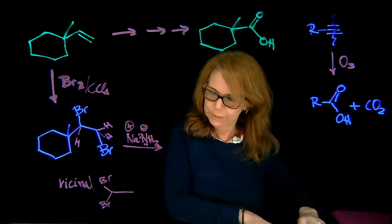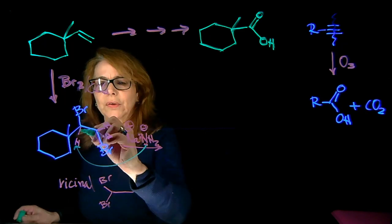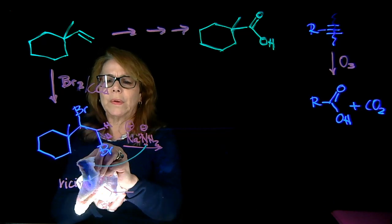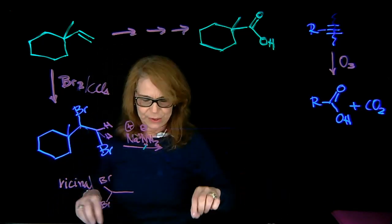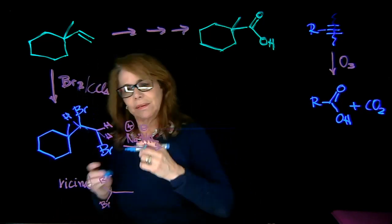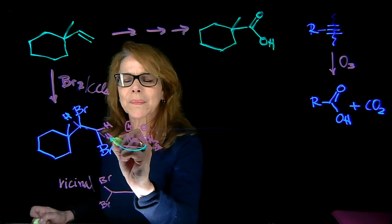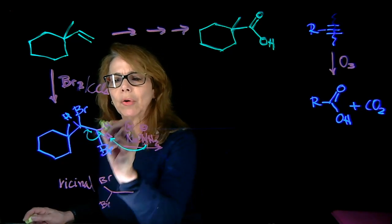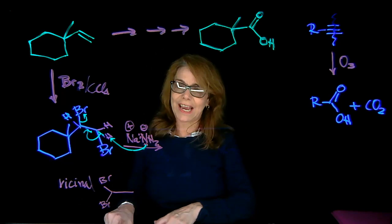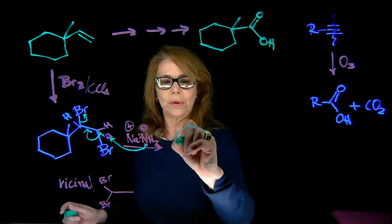So here we're doing an E2. I'm going to draw the hydrogens to keep in mind that we need the anti-periplanar conformation — we want the hydrogen on the opposite side. The lone pair of electrons makes a double bond, giving an alkene. Then in a second elimination, the vinyl bromide still has a bromine and a hydrogen available.